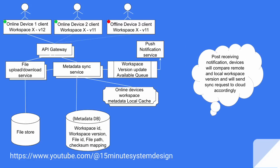Now, post receiving a notification on device two, which is online but on an older version, this device will compare the workspace version it has received. And if there's a mismatch, this means the device needs to have the down sync from the cloud, and will send a specific request to the cloud.